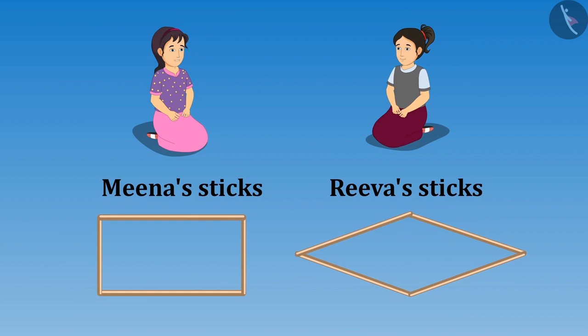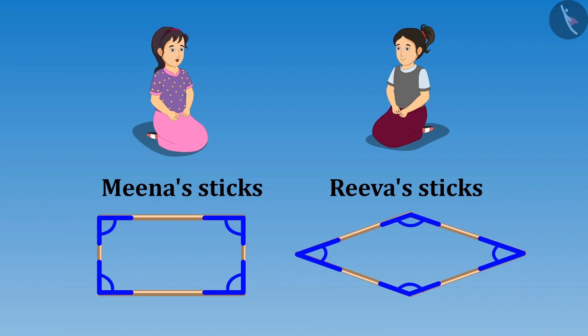Did you see Riva? There are four corners in our figures and these four angles are formed in four different corners. Still both have different shapes.